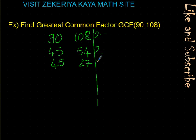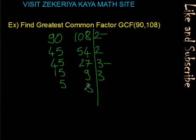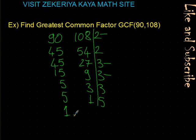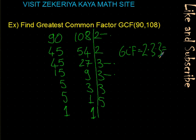45 divided by 3 is 15, and 27 divided by 3 is 9. We divided both, so we sign this 3. Continuing with 3: 15 divided by 3 is 5, and 9 divided by 3 is 3. We divided both again, so we sign this 3. Continuing: 5 divided by 3 — we cannot, 3 divided by 3 is 1. To finish, we divide by 5: 5 divided by 5 is 1. The greatest common factor is 2 times 3 times 3, which is 18.